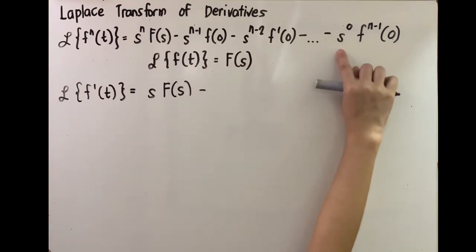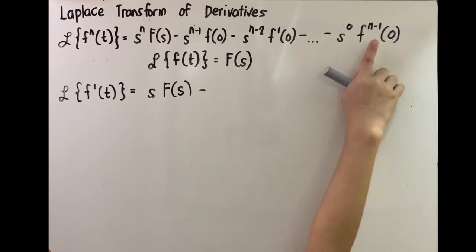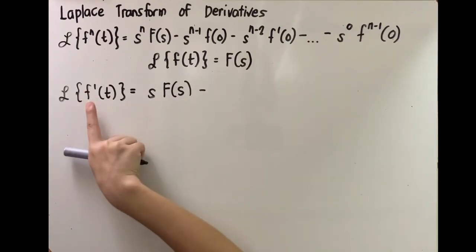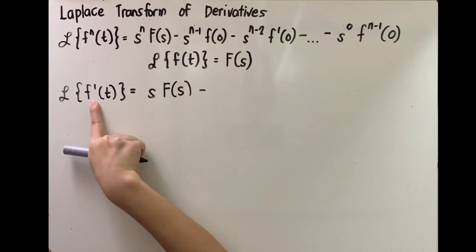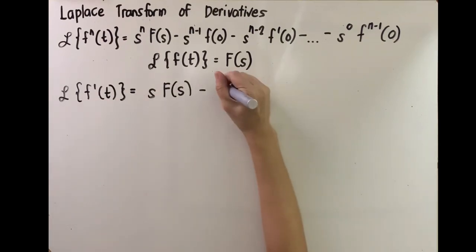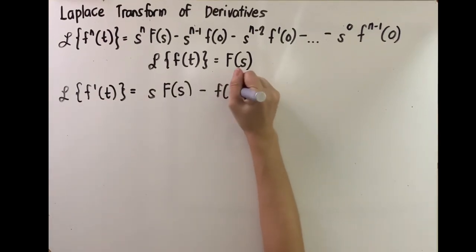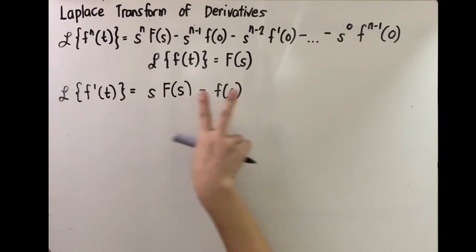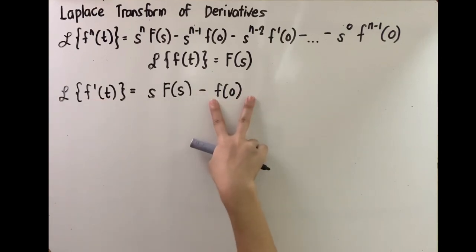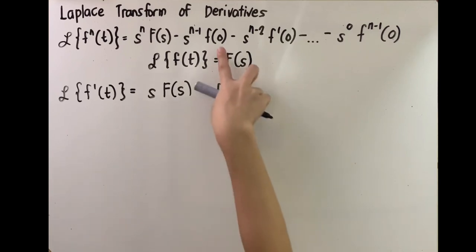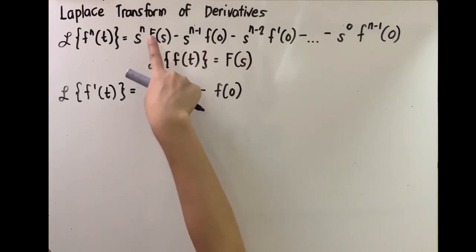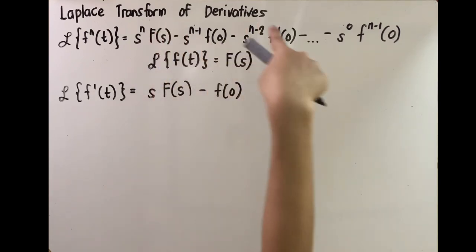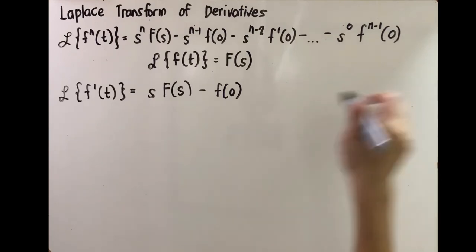Where s raised to 0 is accompanied by one derivative lesser than the given. So if this is f prime of t, we end with f of 0 — the original function evaluated at 0, which is the first in our sequence after F of s. The Laplace transform of f prime of t is therefore s·F(s) minus f(0).